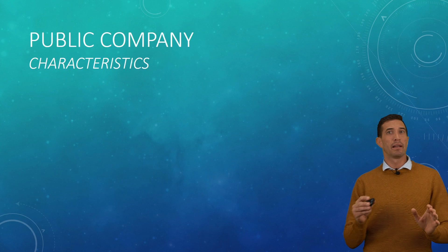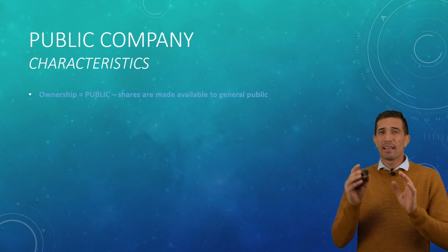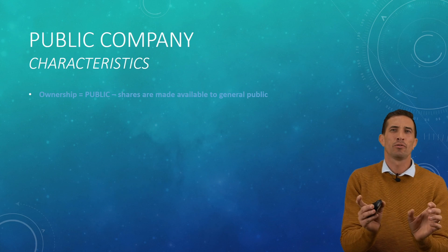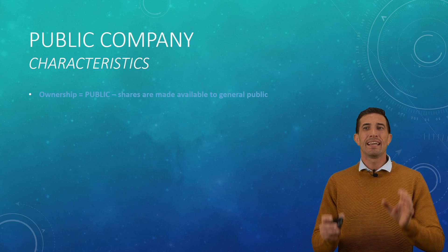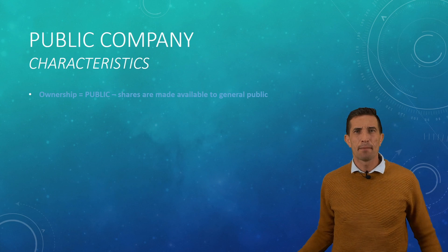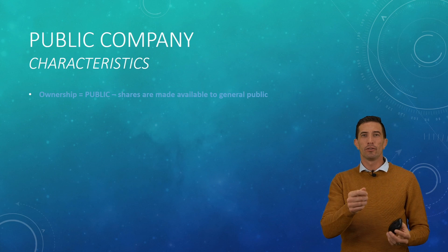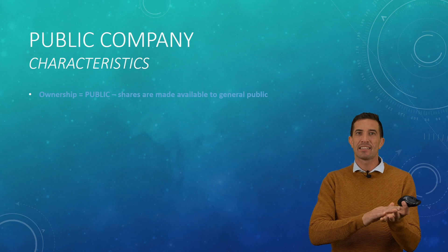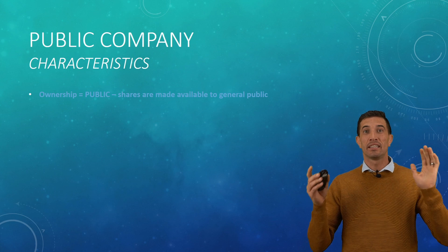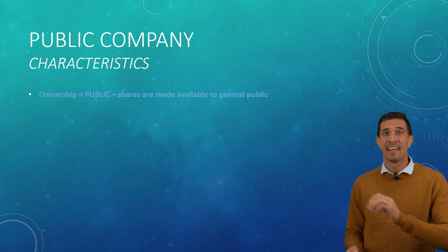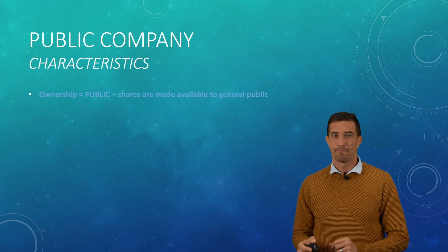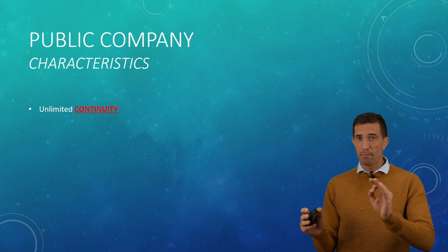So let's look at a public company and its characteristics. A public company is very similar to a private company — everything links up except for one or two minor differences. The ownership is public; the public can buy and sell their shares openly. There is a platform to do that. For example, with a public company you have a platform to buy and sell shares. We call it the JSE, the Johannesburg Stock Exchange, and only public companies can sell their shares on this platform.